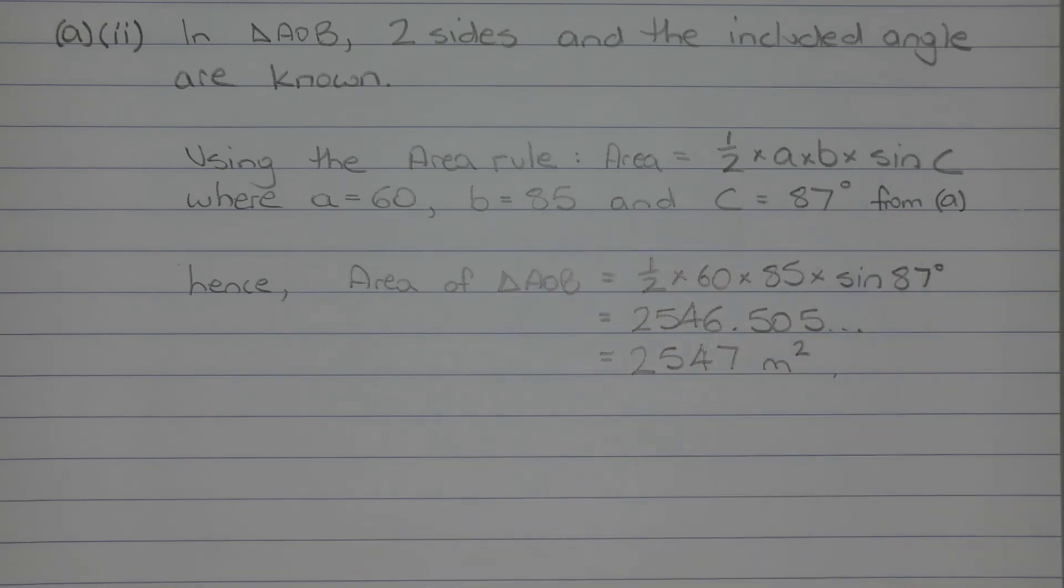Which we found in part A. So substituting these values into the area rule, we get the area of triangle AOB is equal to half times 60 times 85 times sine of 87 degrees, which equals 2546.505 and so on.